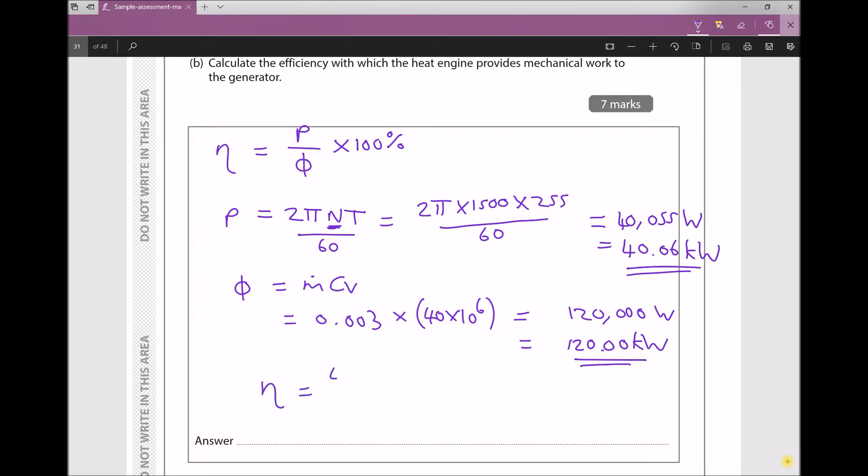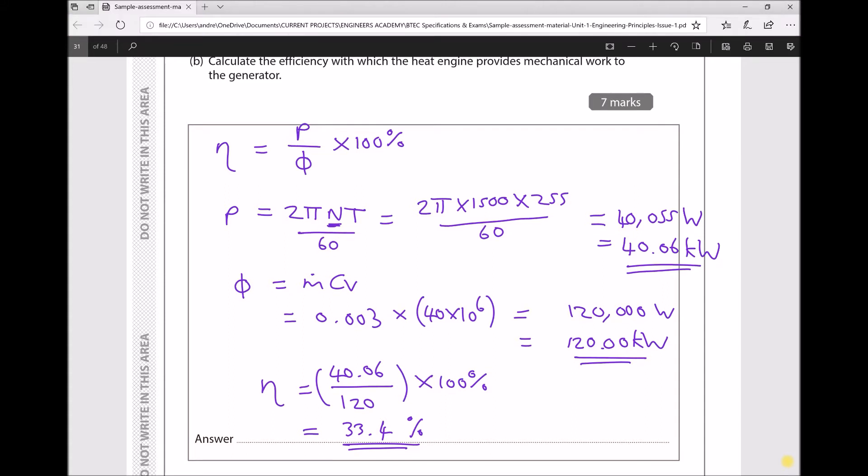And now we can finish by calculating our efficiency. Because the efficiency, we said, was the power, 40.06, divided by the heat energy in, and then we're just going to times that by 100 to get that as a percentage. And that is 33.4%. So it's a relatively low efficiency, but that isn't uncommon in a heat engine. So now we can refer to the final part of the question.